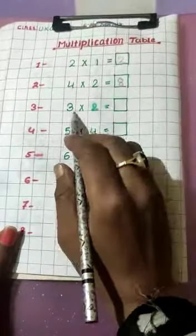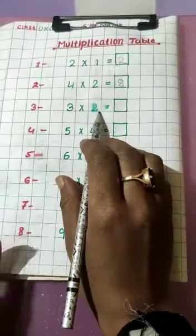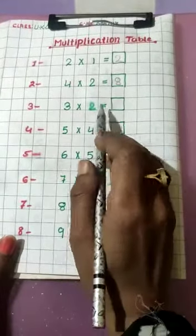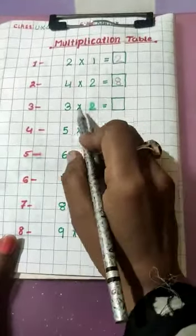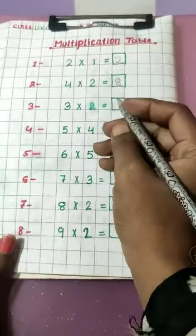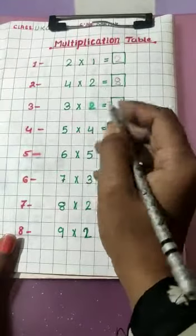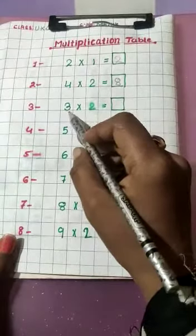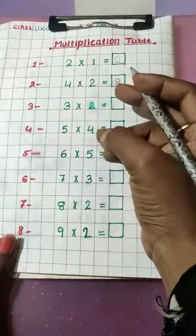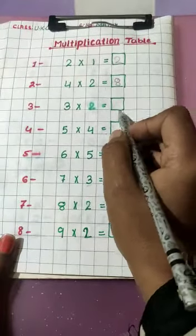Now third one, 3 into 2. Suppose kisi bachche ko 3 ka table nahin aata. Thik hai? To kya pardhayega woh? 2 ka table 3 times pardhayenge. 2 plus 2, 2 plus 4, 2 plus 3 jaa 6. 2 plus 3 jaa kitna aaya? 6. And if someone knows the table, 3 ka table 2 times pardhayenge. 3 plus 3, 3 plus 2 jaa 6. What do you think? The answer kya aaya 6?